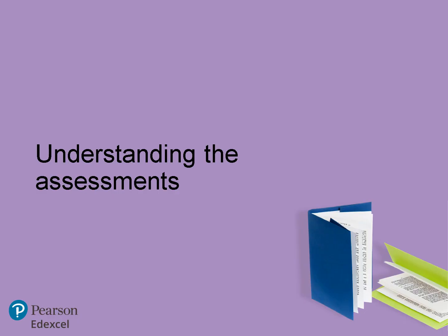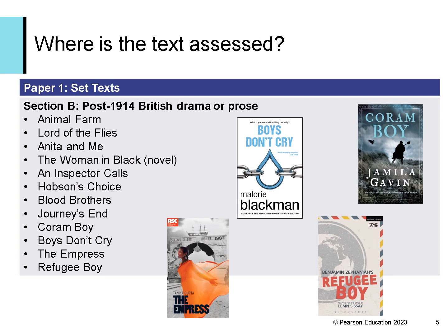Now we all have a brief overview of the play, let's look at how the students are assessed on the text in the exam. This text is part of Paper 1, Section B, Post-1914 British Drama or Prose. As you can see there are a lot of texts to choose from in this section, and your students will need to answer a question on one of the set texts listed.